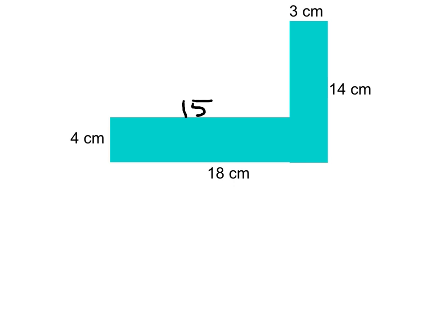Going vertically — up and down — the full height of the figure is 14. Part of the way is 4, so the rest of the way would give us 14. The missing measurement is 10.